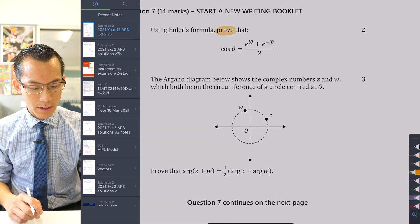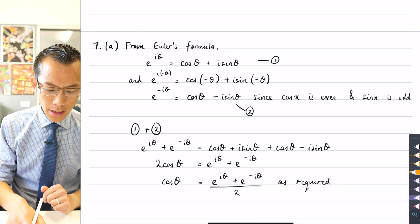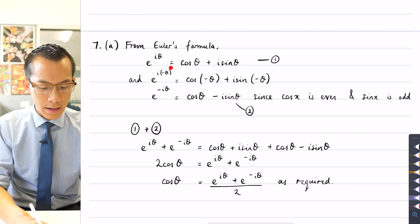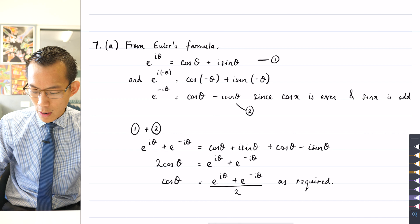So let me show you the way that I solve this. If you come over to my solution, you can see I've begun with Euler's formula, e^(iθ) = cos θ + i sin θ.